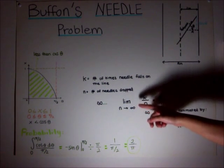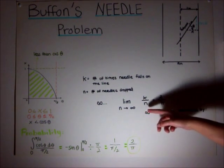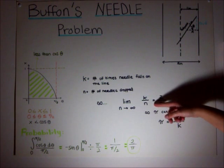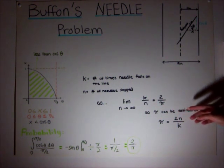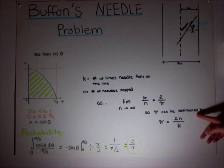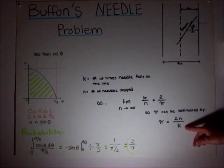So the limit as n approaches infinity of k over n can be set equal to 2 over pi. So therefore, pi can be estimated by the equation pi equals 2n over k.